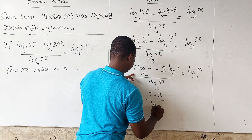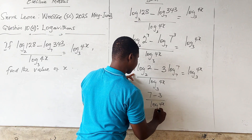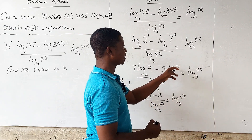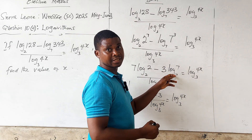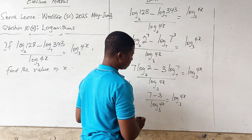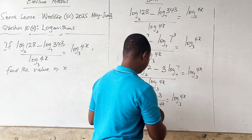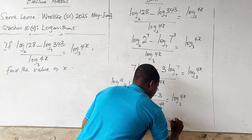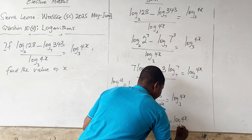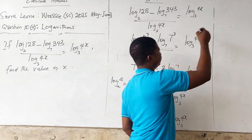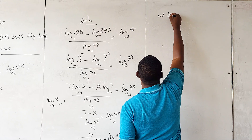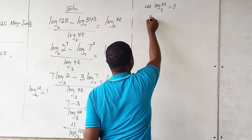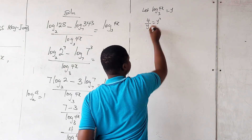So we now have 4 over log 4x base 3, equals log 4x base 3. We can let log 4x base 3 equal y, so we have 4 over y equals y.